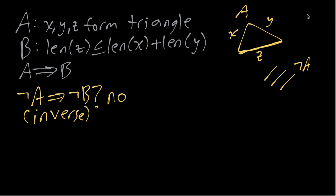So for example we could have X here, Y here so they're not connected, they're not forming a triangle and then we could have a really really long Z. So in this example A is not true because it's not a triangle or sorry we want B to be true.